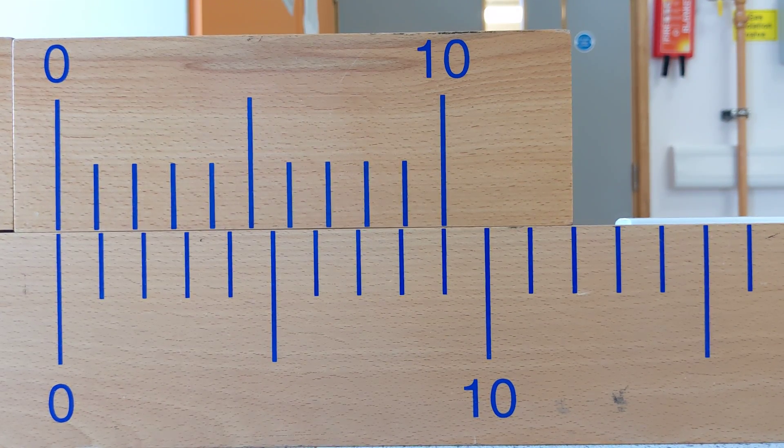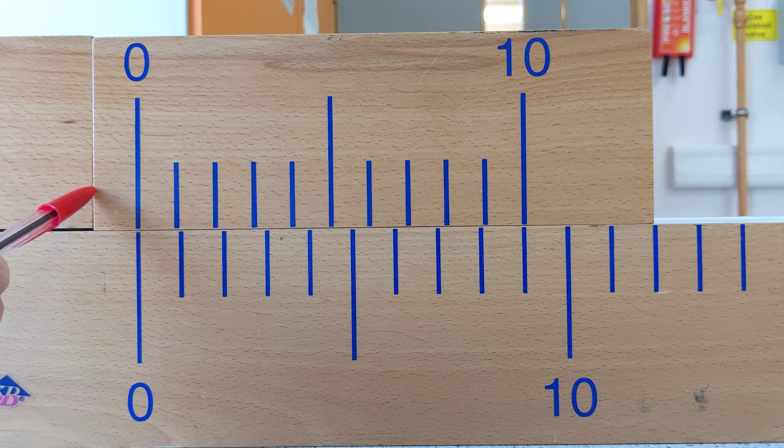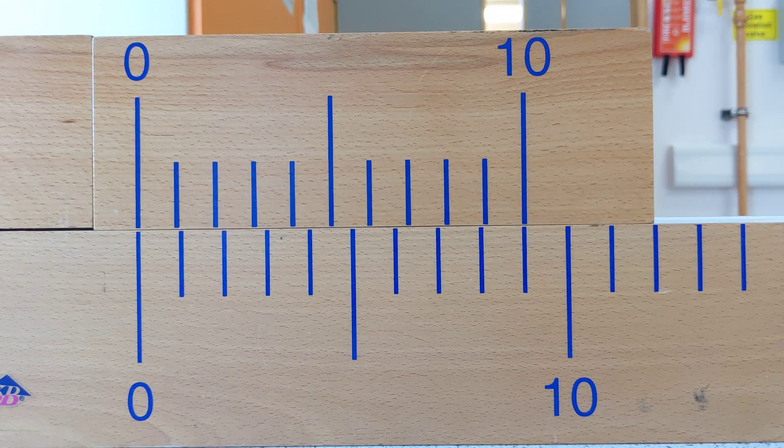How to read a vernier scale. You'll notice that when this part here is fully closed, the zero on the vernier scale lines up with the zero on the main scale.